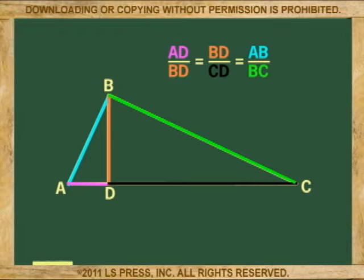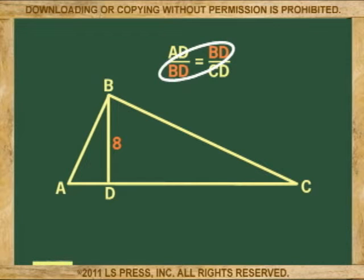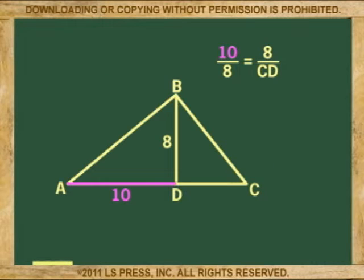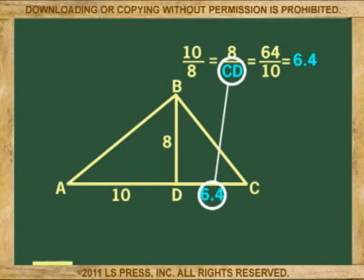Let's do some examples. If the altitude of a right triangle is 8, then the geometric mean in the proportion of the other sides is also 8, and controls how large the other sides will be. If the horizontal side of the left triangle is 10, then the horizontal side of the right triangle is 6.4. Because 8 times 8 is 64, and 64 divided by 10 is 6.4. That is what the altitude does when it becomes the geometric mean.